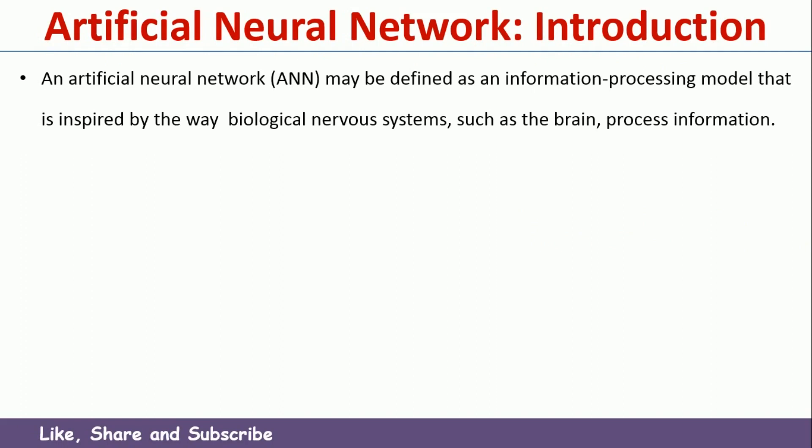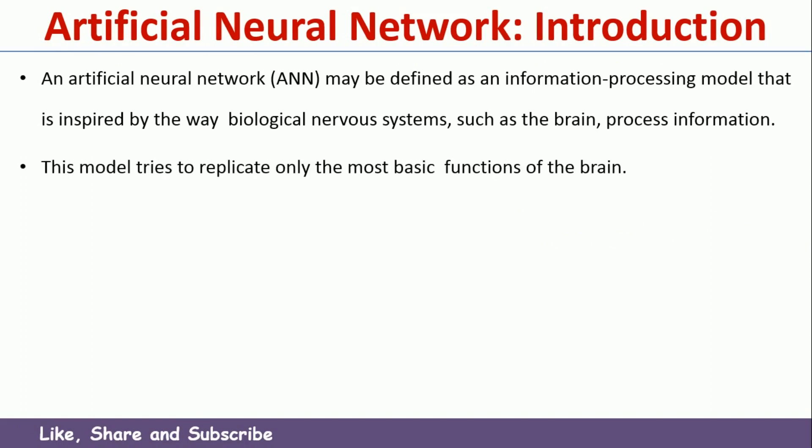Artificial Neural Network is an information processing model similar to the human brain — the way the human brain processes information, similarly the Artificial Neural Network processes information. However, the Artificial Neural Network cannot do all the functionalities of the brain because the brain is a very complex nervous system. It does a lot of computation and those computations cannot be replicated in an Artificial Neural Network. But still, we can do most of the functions that the brain does in an Artificial Neural Network.